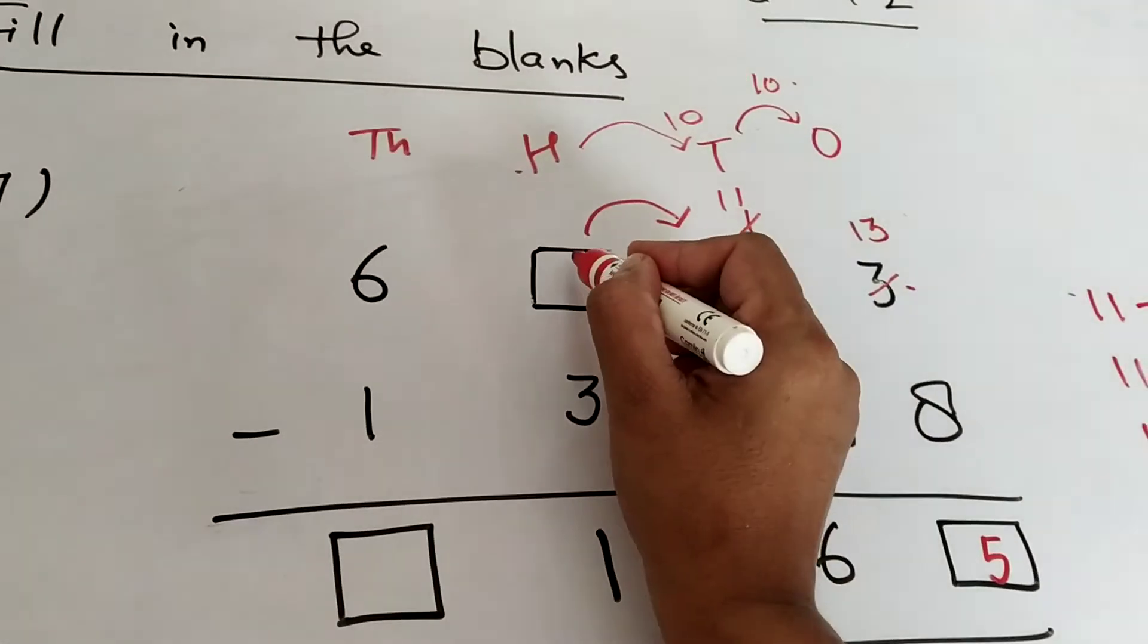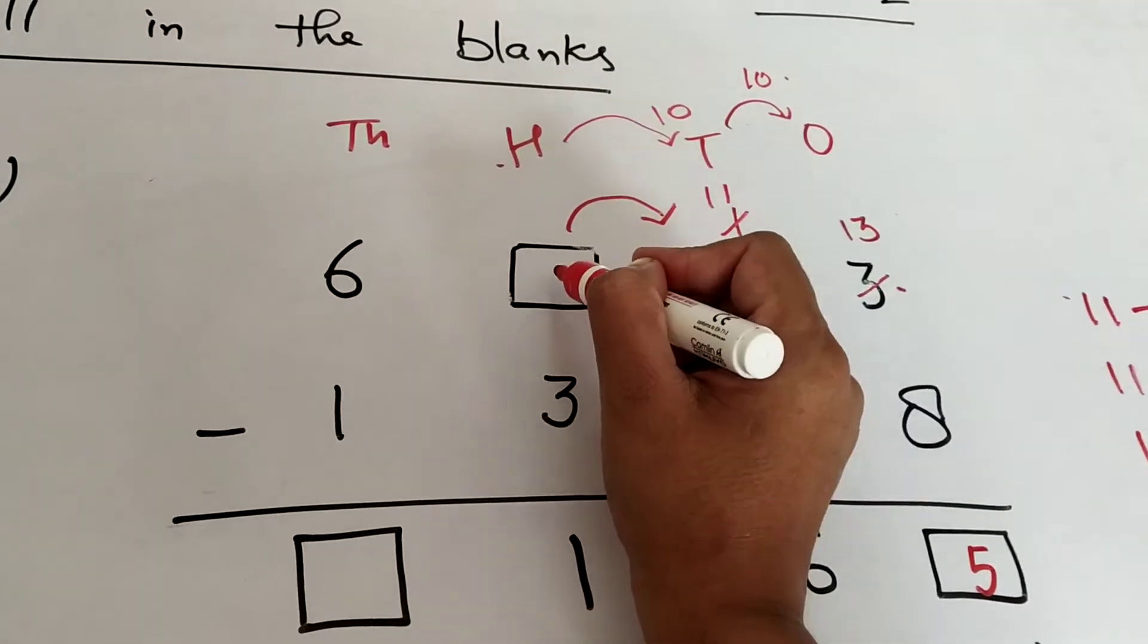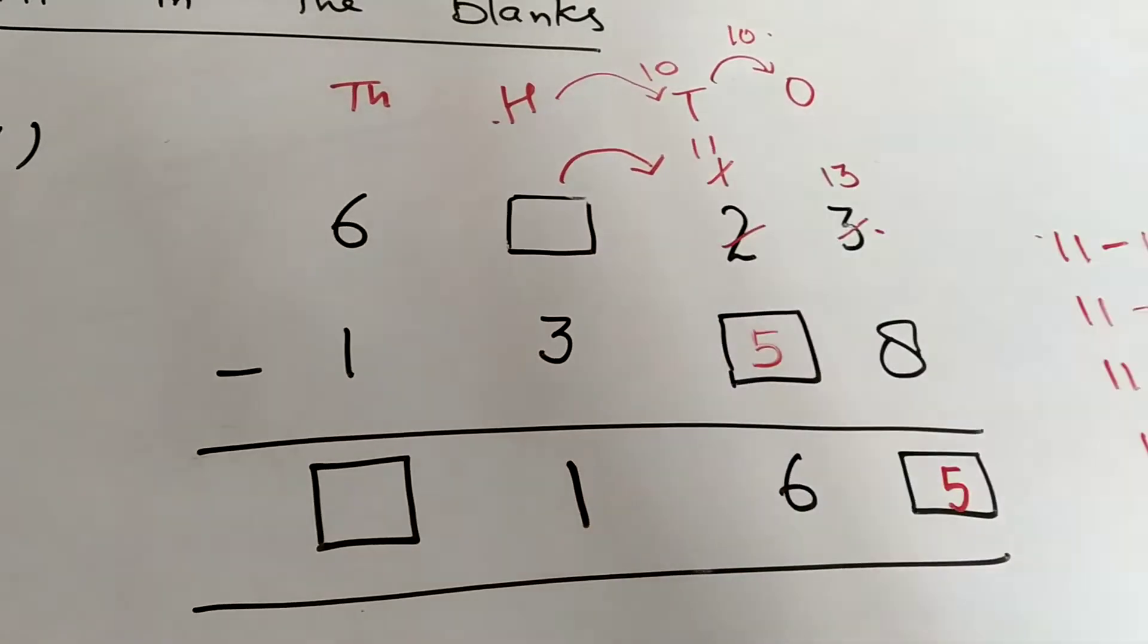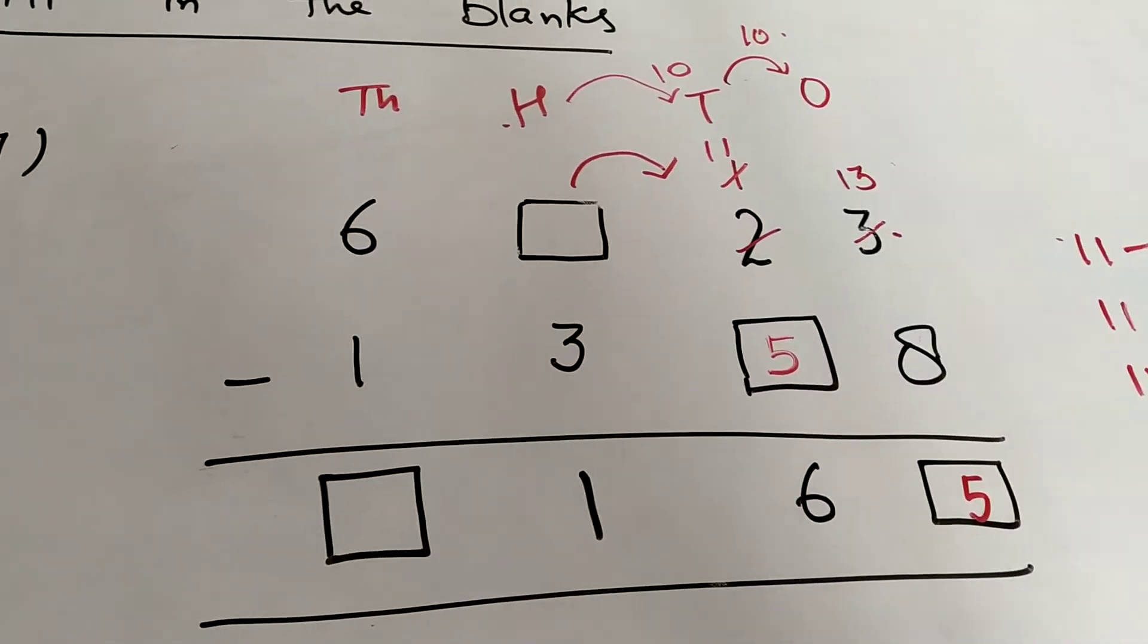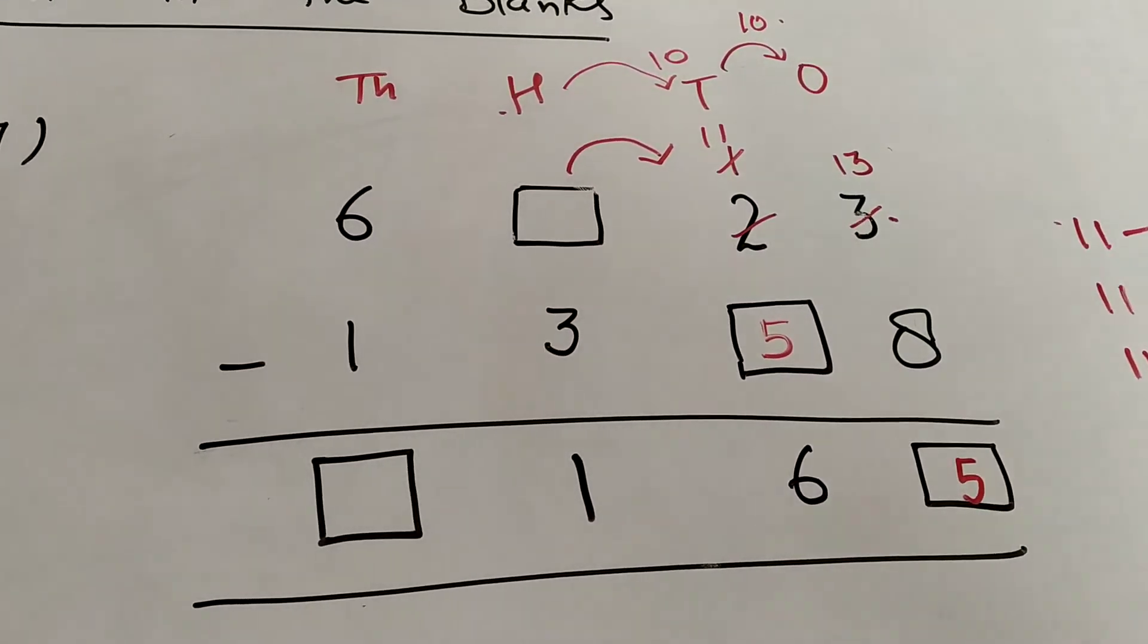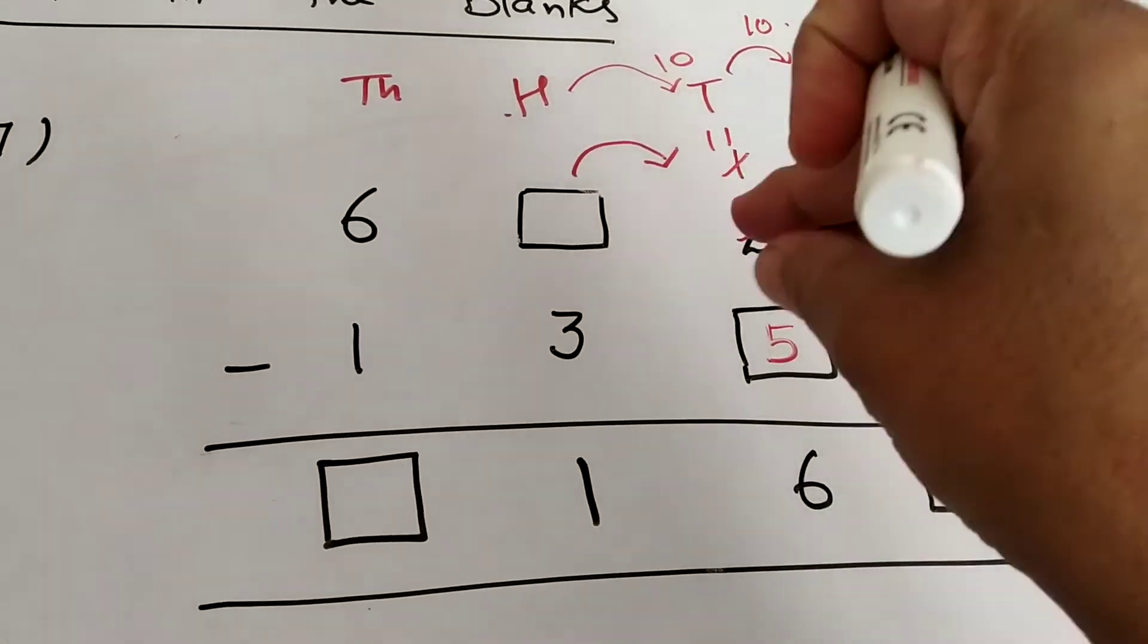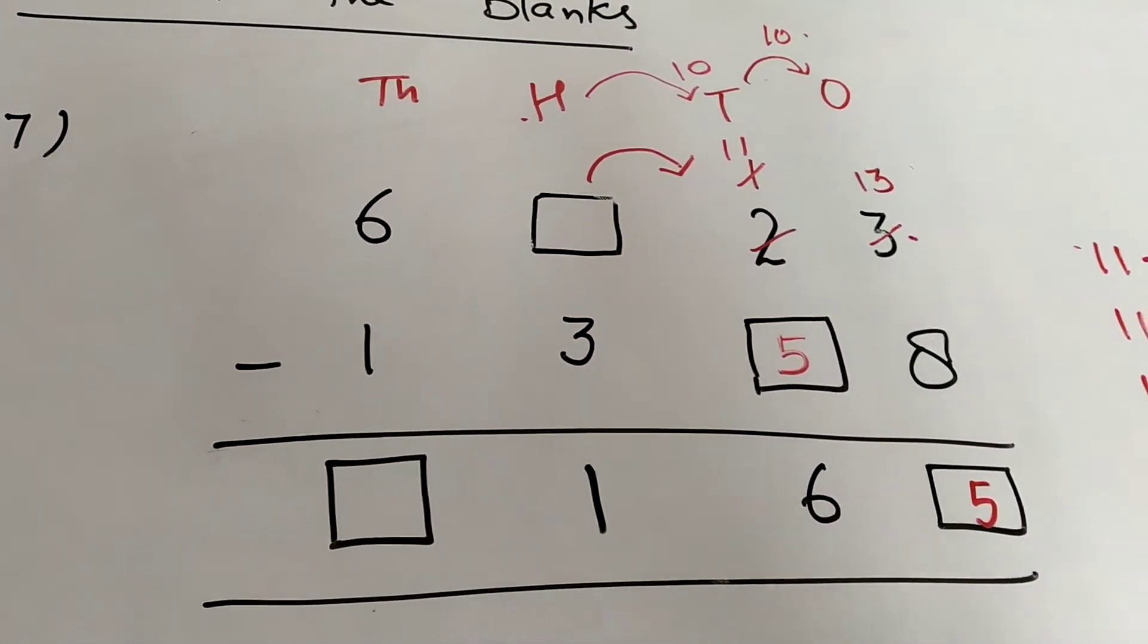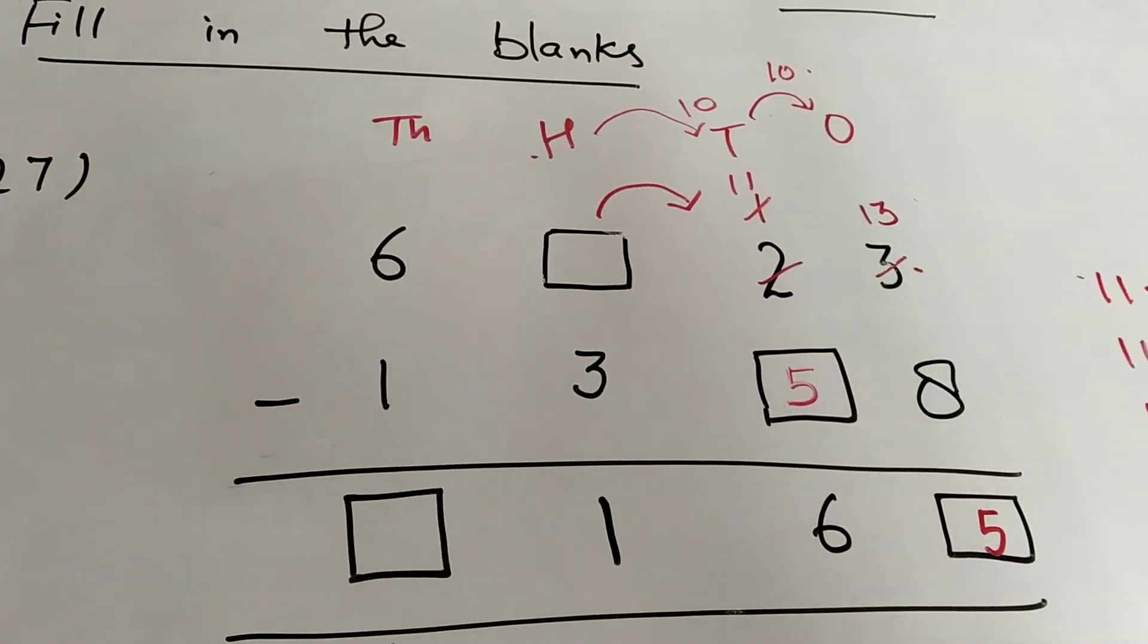Now we have to think of a number here, after subtracting which with 3 we should get 1. We have to think of a digit from which we can subtract 3 to get 1.